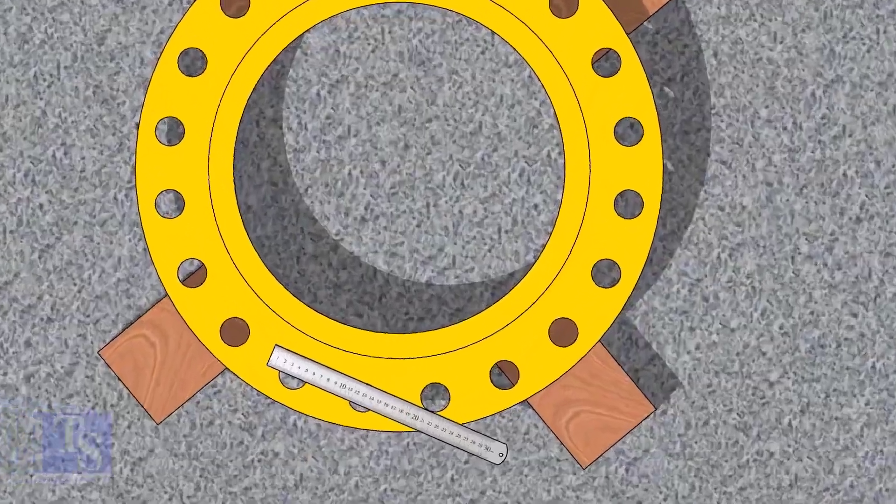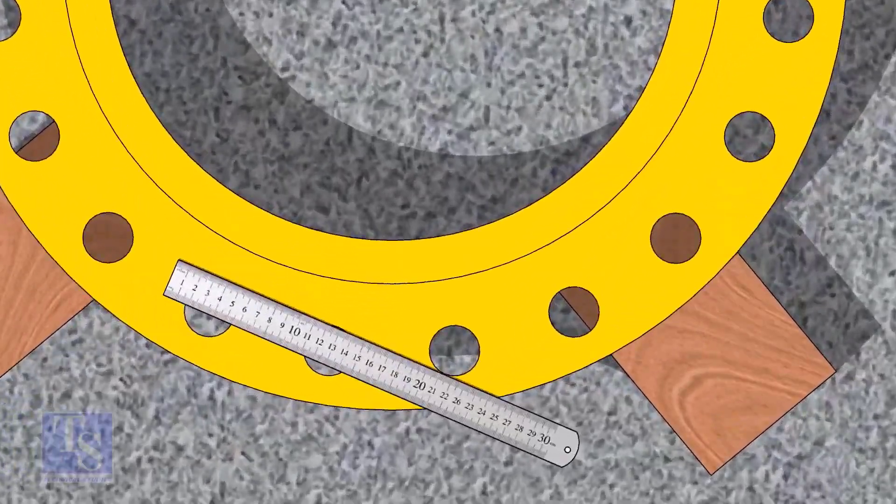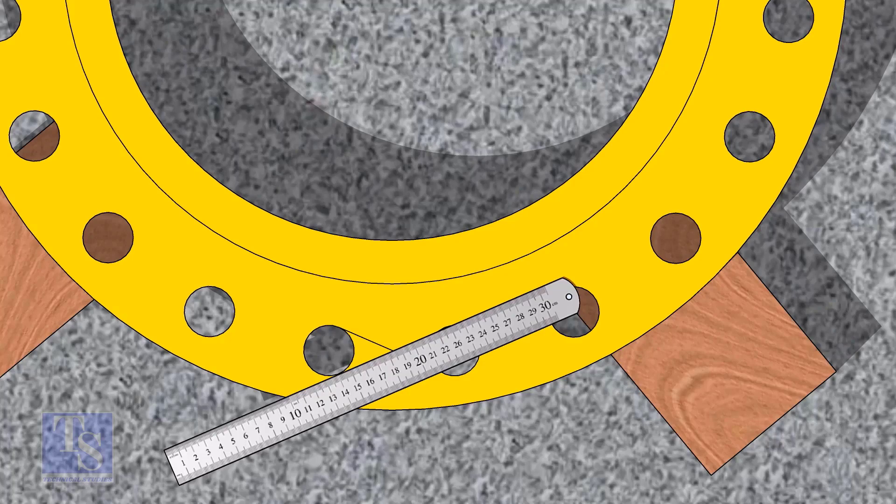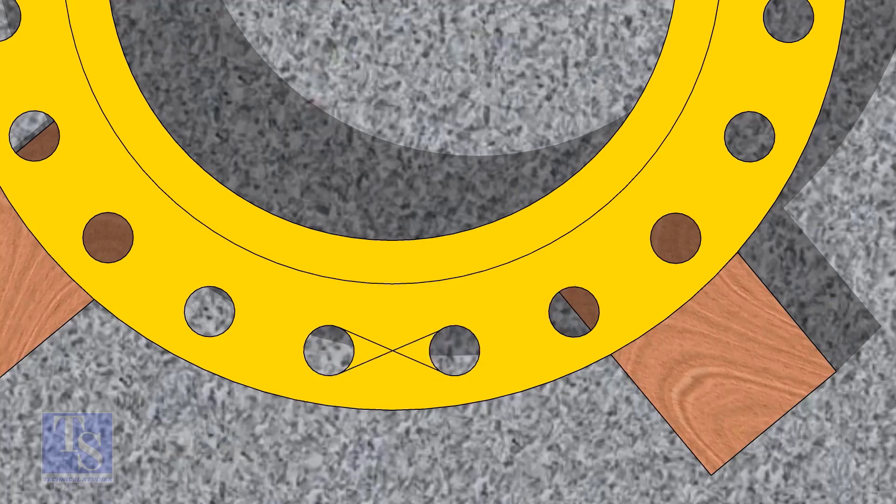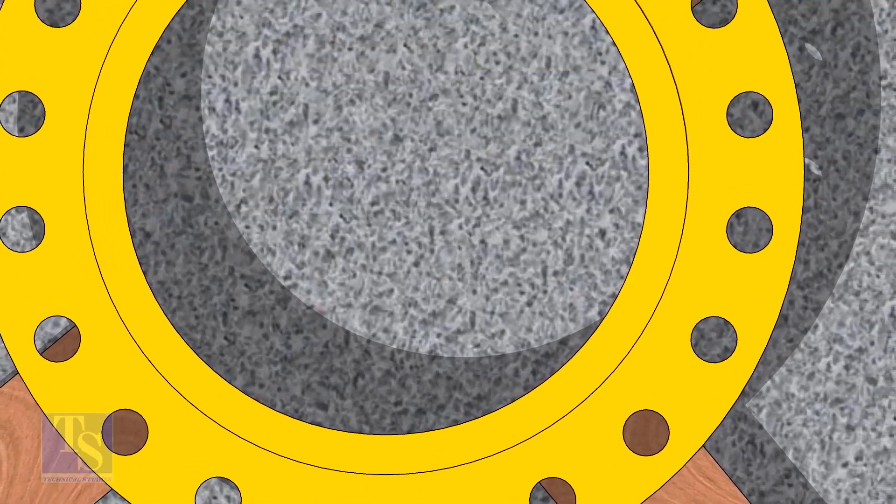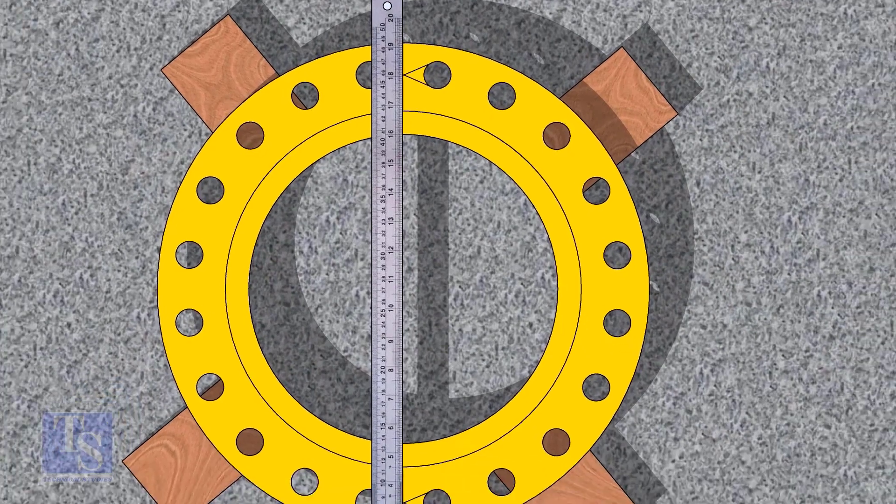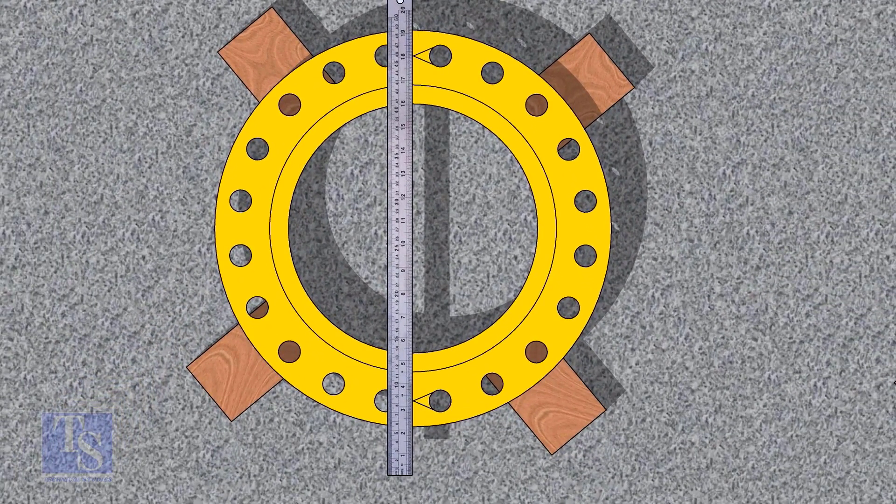Let us mark the center line of the flange. Draw tangential lines of two adjacent holes. The intersection of the lines is the center of these holes. Draw the center of the two holes on the opposite side.